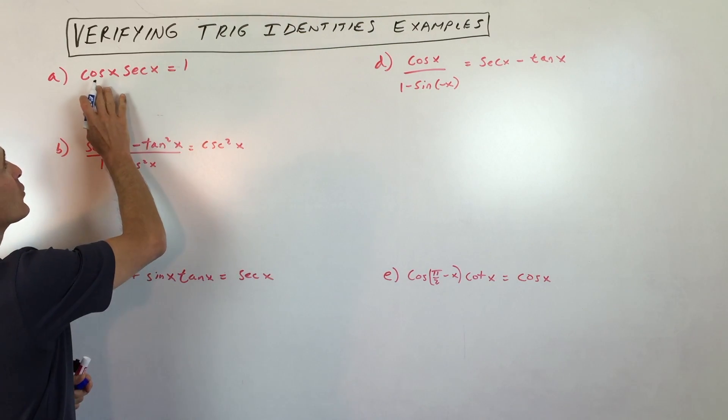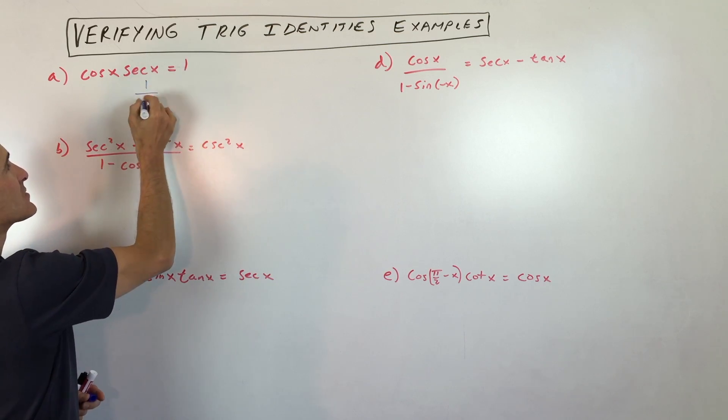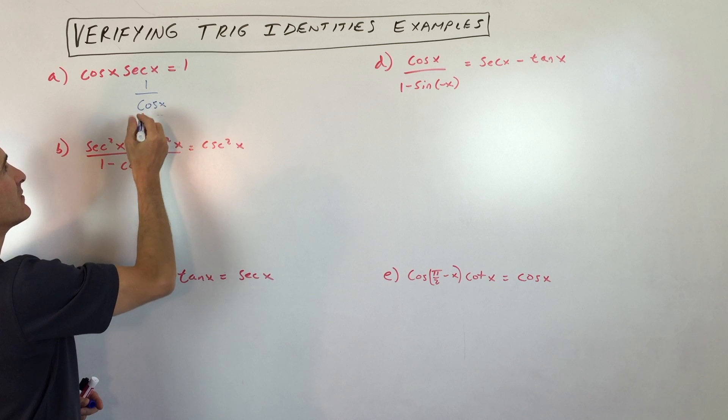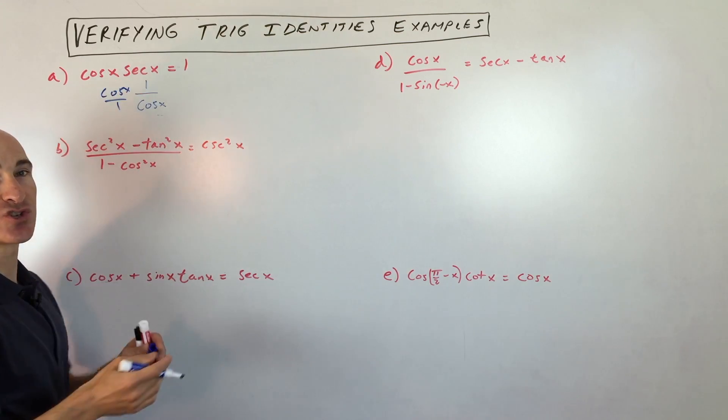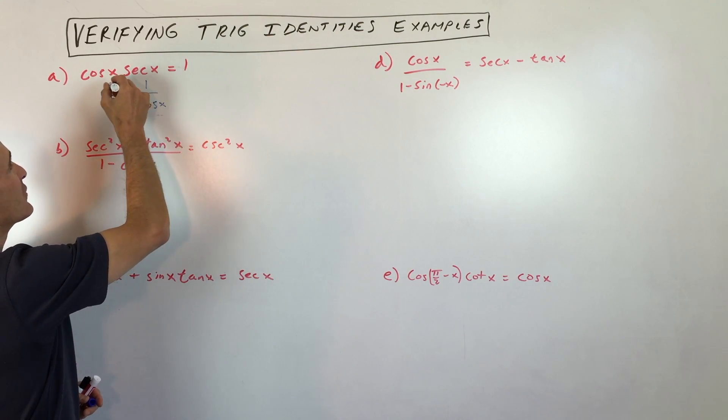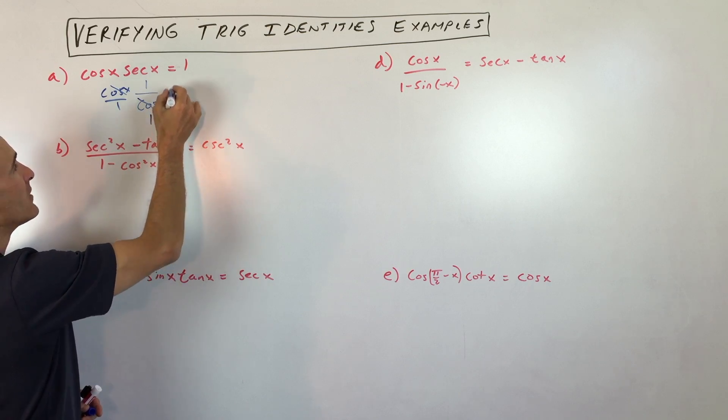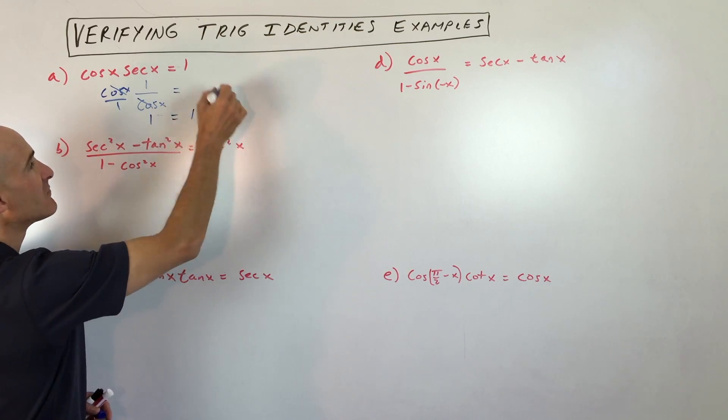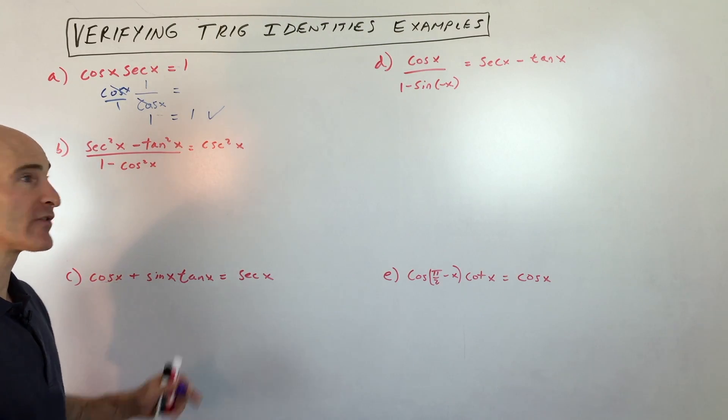So this first one, cosine of x times secant of x equals 1. Well, we know that secant of x is the reciprocal of cosine of x. So I'm just going to do that identical substitution. I'm just substituting or swapping them out. And now I can see that these cosines are going to cancel, and I'm left with 1 over 1, which equals 1. So 1 equals 1, check. So we proved it. That was an easy one. Let's get into some more challenging ones, though.